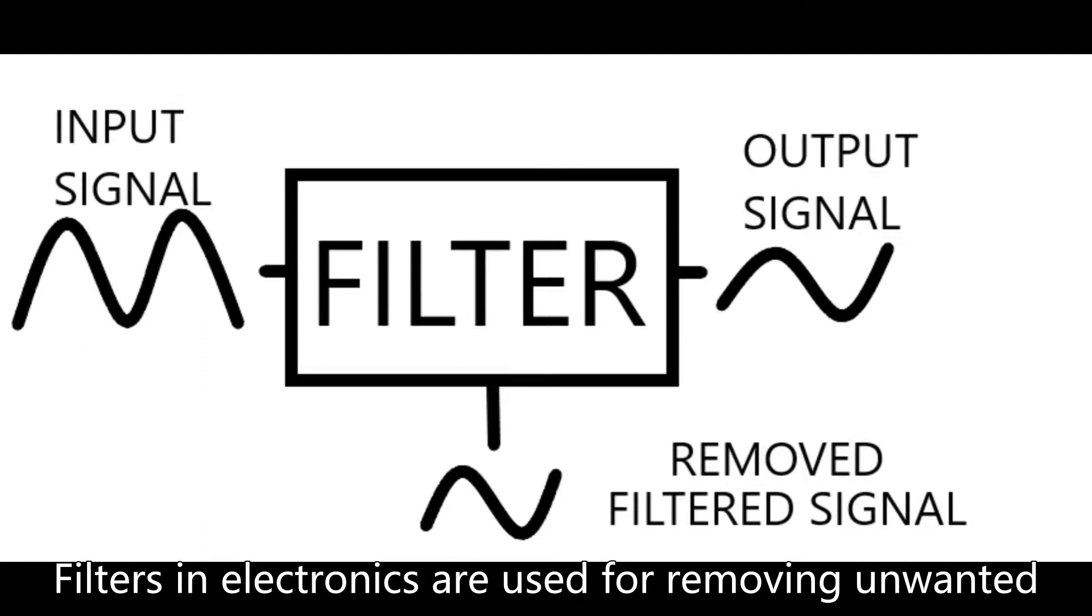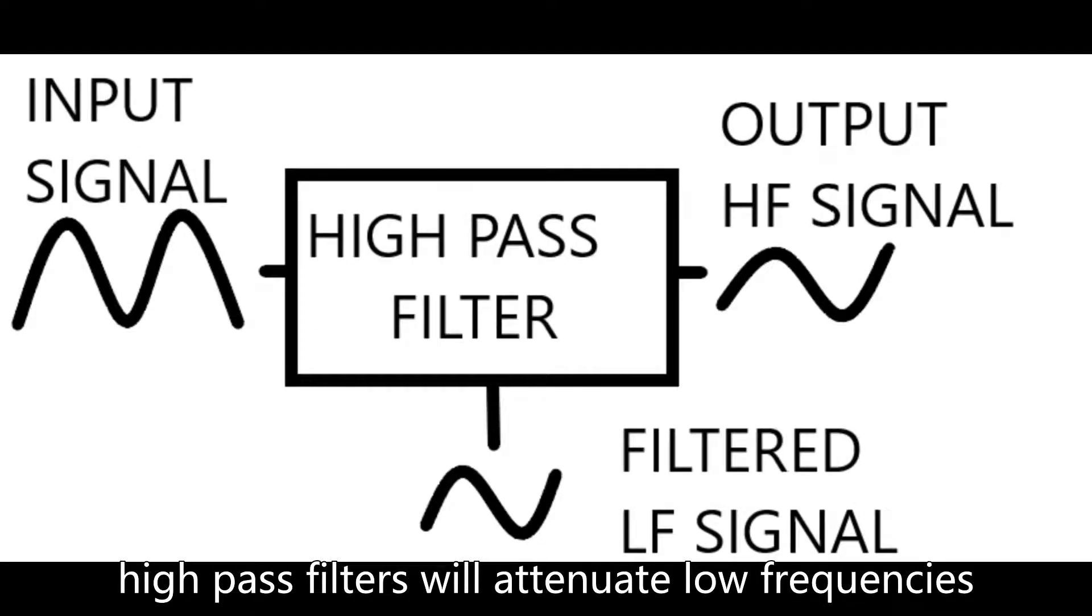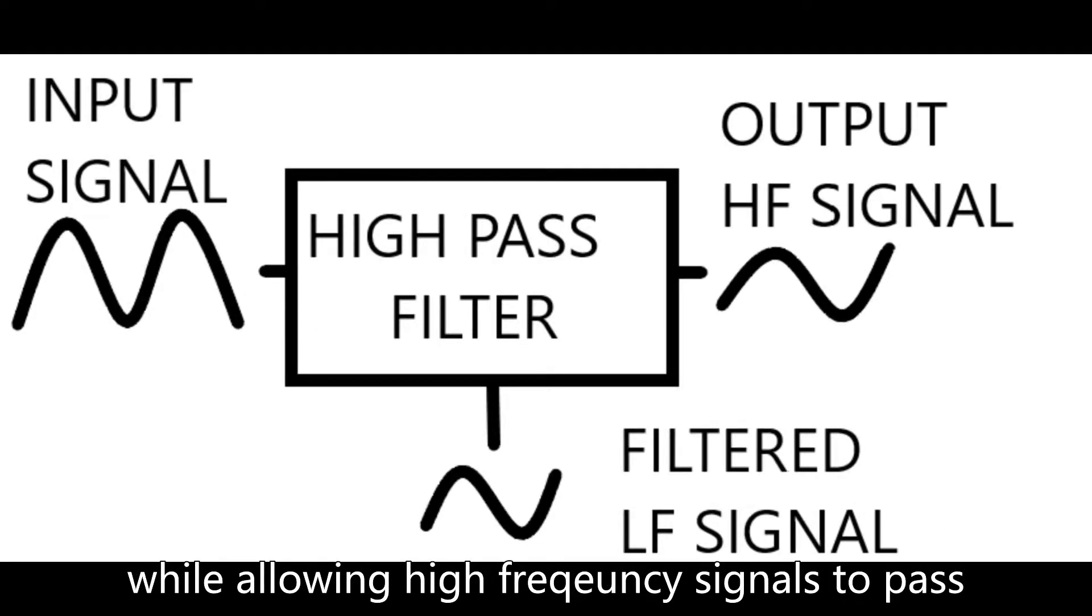Filters in electronics are used for removing unwanted signals out of a sinusoidal signal. High pass filters will attenuate low frequencies while allowing high frequency signals to pass.